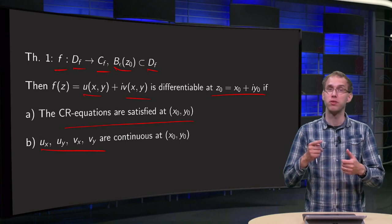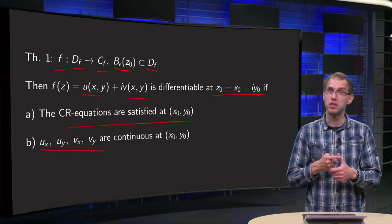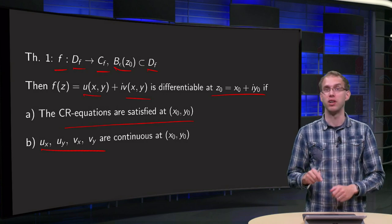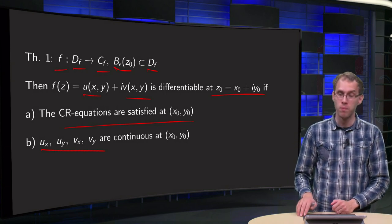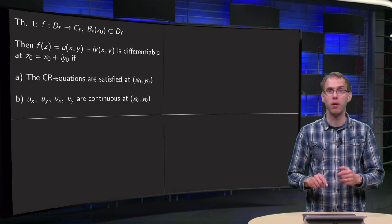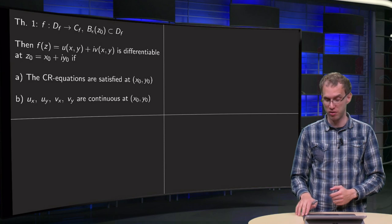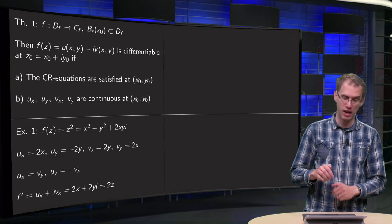So your function is differentiable, first of all you need Cauchy-Riemann, you need to check Cauchy-Riemann, and second you need that all partial derivatives are continuous. The second restriction is less severe than the first one because most of our functions are continuous. Let's take a look at a few examples.